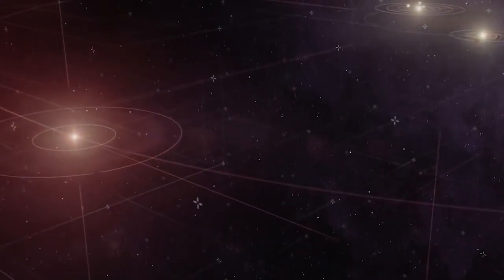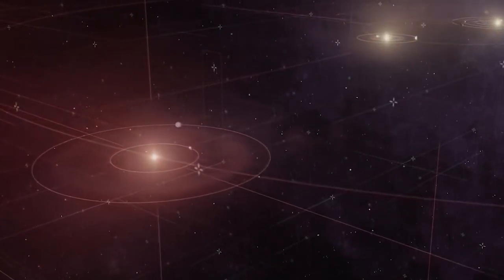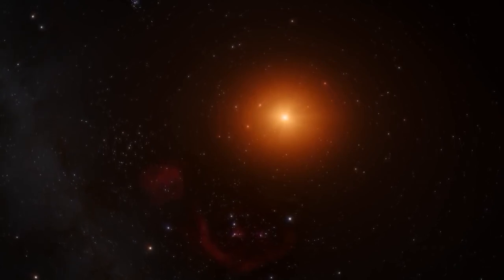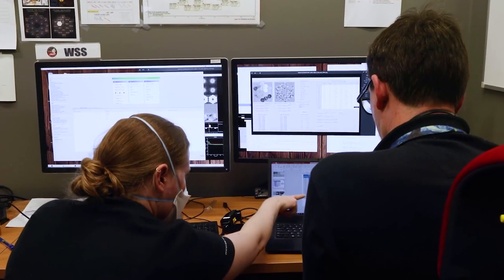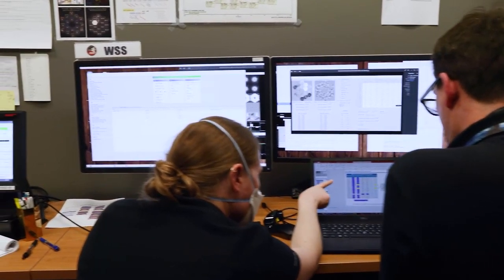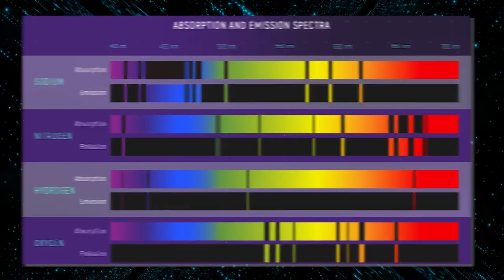A transmission spectrum is made by comparing starlight filtered through a planet's atmosphere as it moves across the star to the unfiltered starlight detected when the planet is beside the star. Researchers can detect and measure the abundances of key gases in a planet's atmosphere based on the absorption pattern, the locations and heights of peaks on the graph.